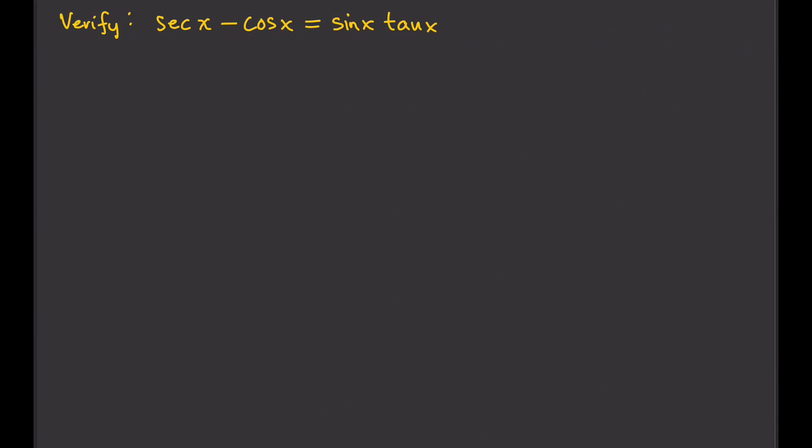Verify the following trigonometric identity. So when we verify or prove a trigonometric identity, what we do is we will start at the left side, and then use the trigonometric identities that we know to transform this into this.